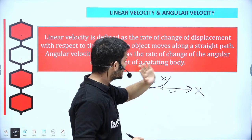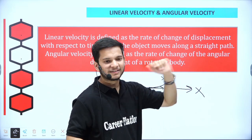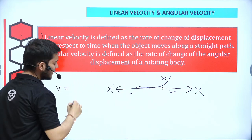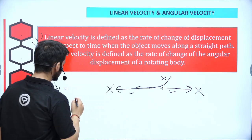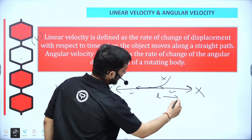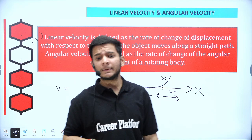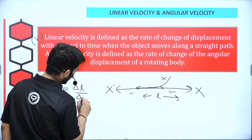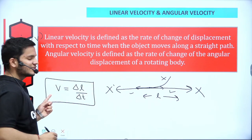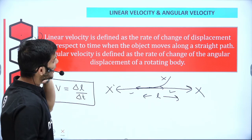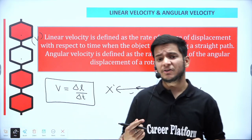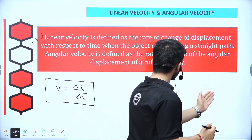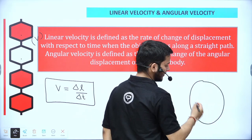So linear velocity is the rate of change of displacement with respect to time when the object moves along a straight path. And here I am going to say, displacement change is the rate of displacement. So velocity is the rate of change, so I am going to say del L over del T.